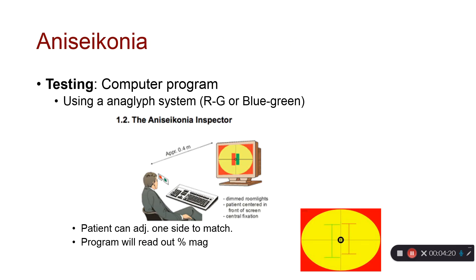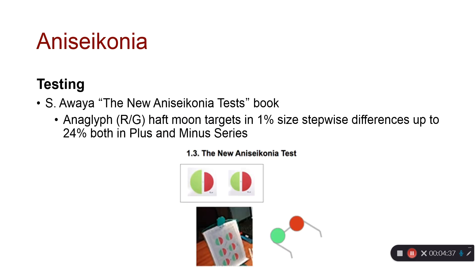There are also computer programs that do very similar things — measuring magnification while the patient looks through red-green glasses. One eye sees the green image and one eye sees the red image. You alter the size of both images until they're equal, and the program gives a readout of the magnification difference. Finally, there's a test book similar to color vision and stereo books, with different-sized circles and red-green glasses, where the patient identifies which circles are equal — giving the magnification between the two eyes.